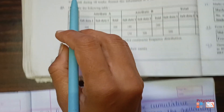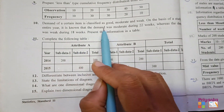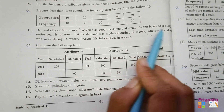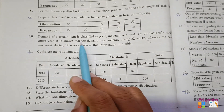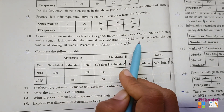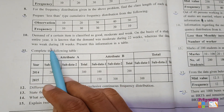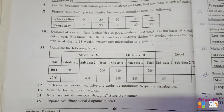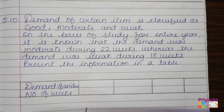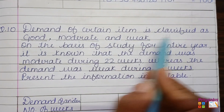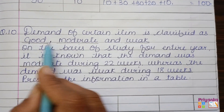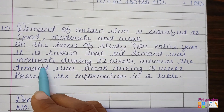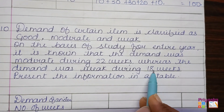Question number 10: the demand of a certain item is classified as good, moderate, and weak. On the basis of a study of the entire year, it is known that the demand was moderate during 22 weeks whereas the demand was weak during 18 weeks. Present the information in a table. The classification is done about the demand: good, moderate, and weak.